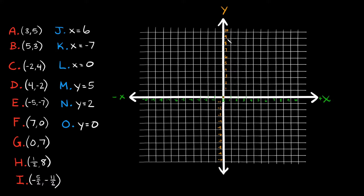It's the same thing with the y-axis. This right here would be 0, and when you go up, the numbers are increasing in the positive direction: positive 1, positive 2, positive 3, positive 4. So this is the positive y-direction. And then going down, you can see it's negative: negative 1, negative 2, negative 3. So this would be the negative y-direction.